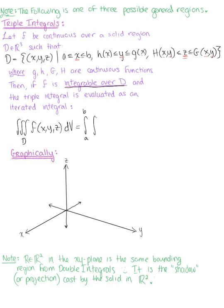The integral from h(x) to g(x), and then our inner integral is capital H of x, y to capital G of x, y, and we have our function f of x, y, z, and the order of integration here will be dz dy dx.